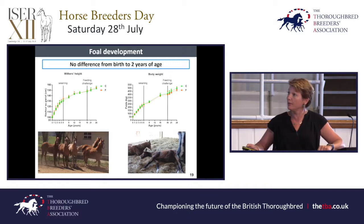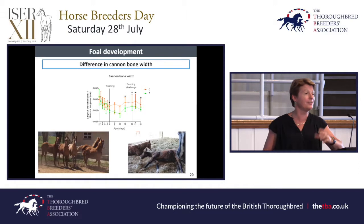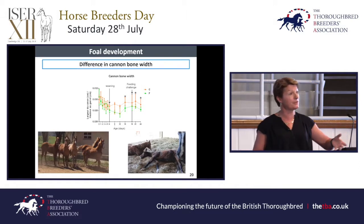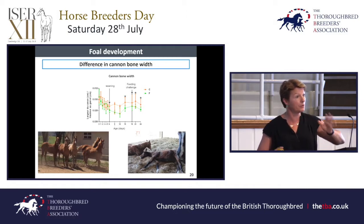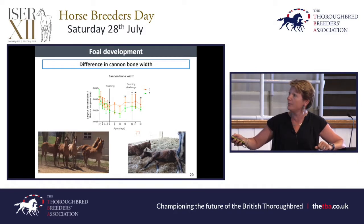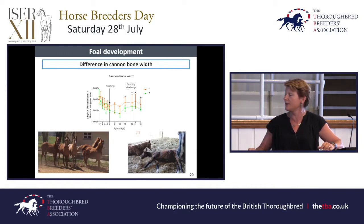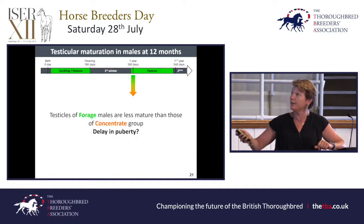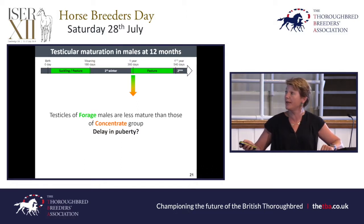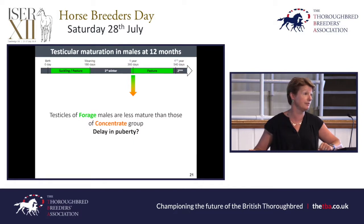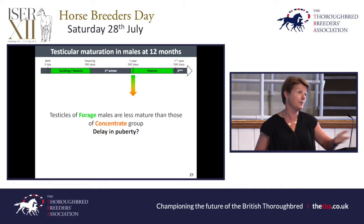In terms of fetal development, we saw no difference in size or body weight. However, we measured the cannon bone, and the forage animals had a smaller cannon bone width — relevant for show jumpers, as cannon bone thickness can matter when coming down from a jump. At about one year of age when we gelded the animals, the testicles of the forage males were much less mature than those of the concentrate group, which could indicate a delay in puberty for these forage animals.